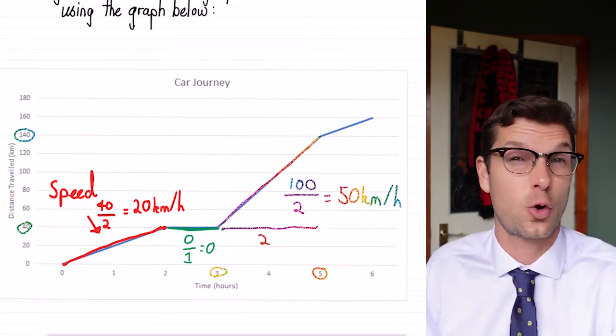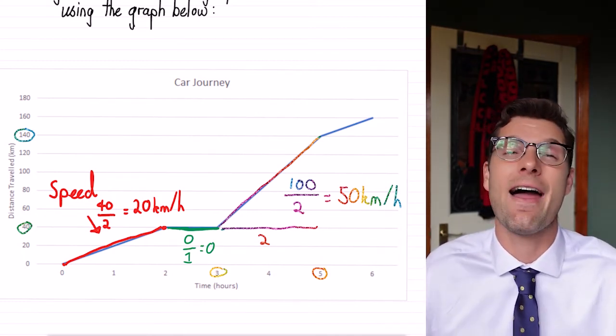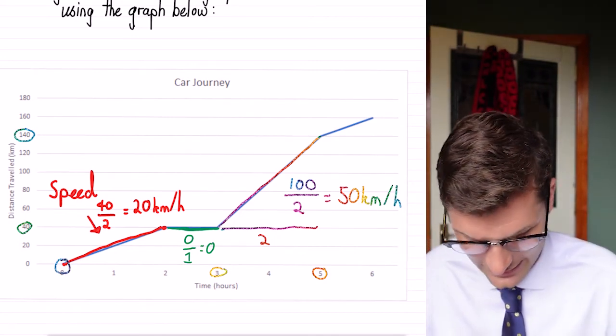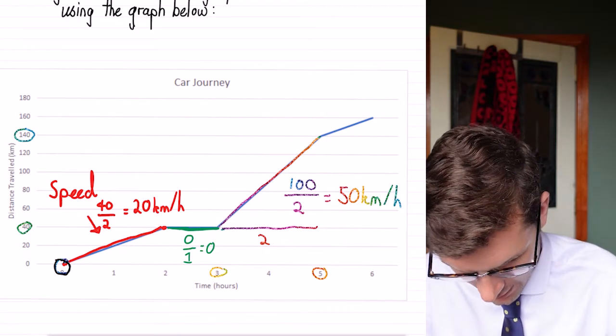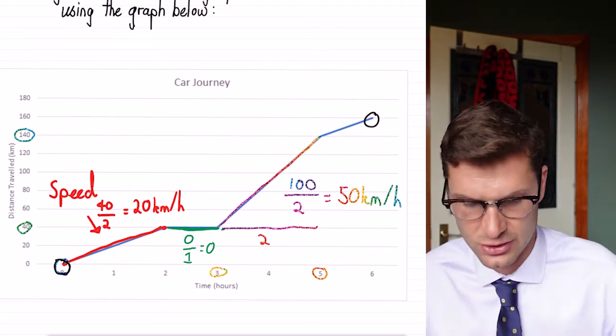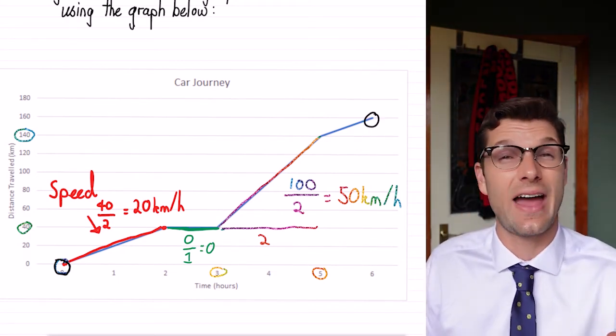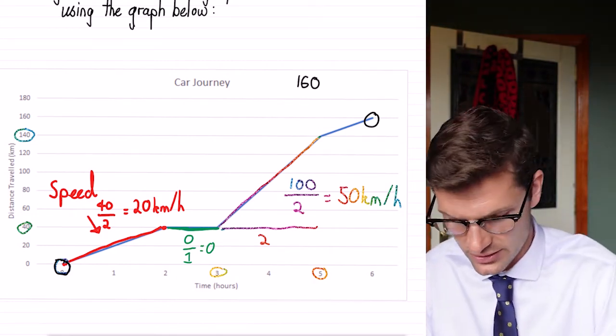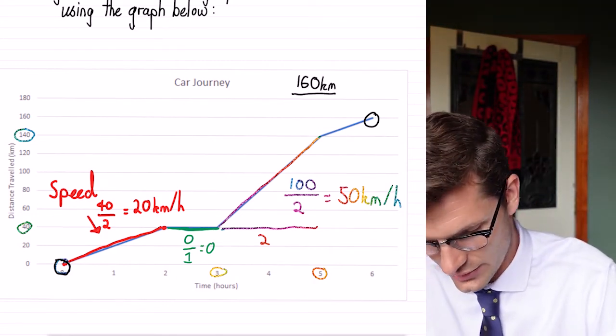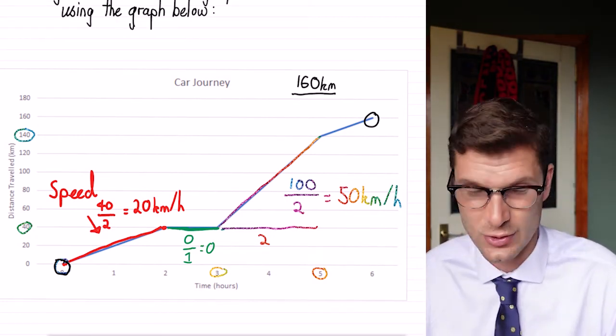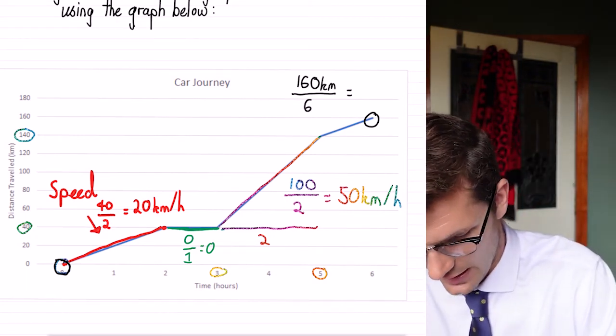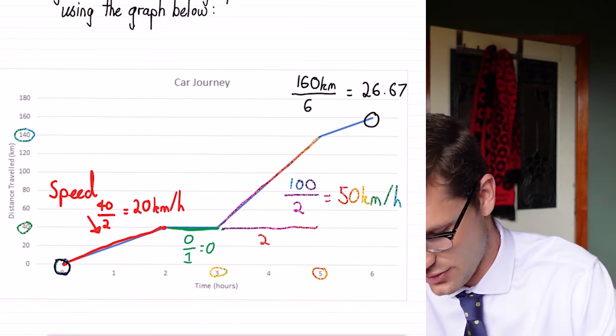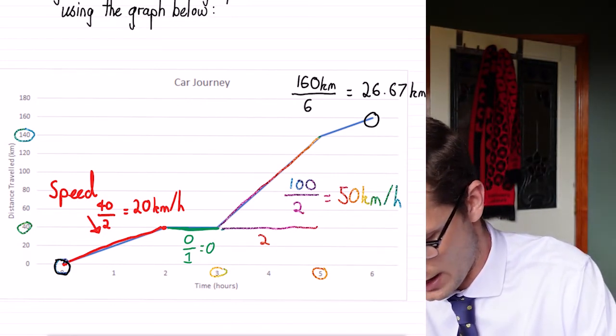But the last question that we could be asked is, what's the average speed for the entire graph? So that means starting here at zero and going all the way up to our final number. So the average speed was our distance, which is 160 kilometers, divided by the total time it's taken, which was six hours. If you plug that into your calculator, it equals 26.67 kilometers per hour.